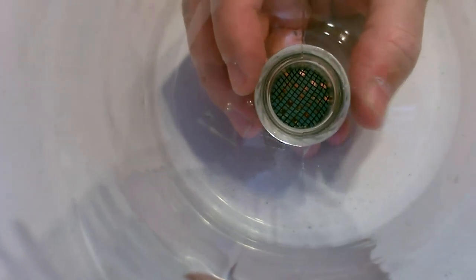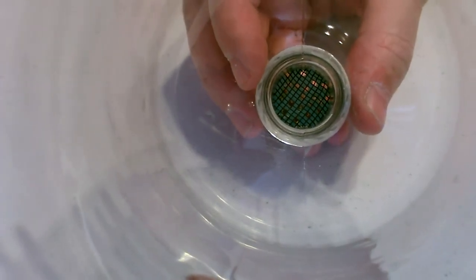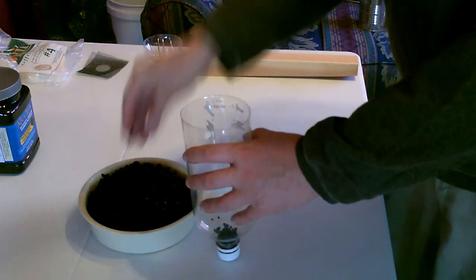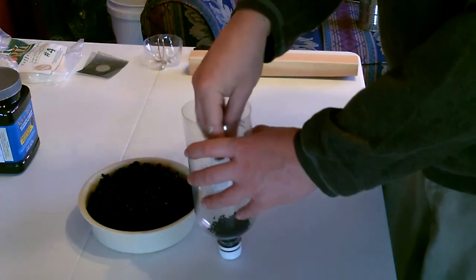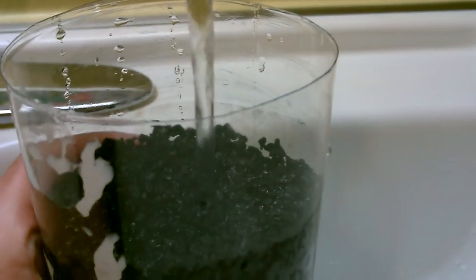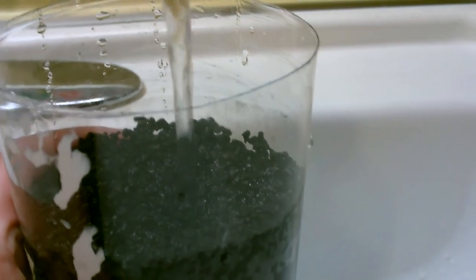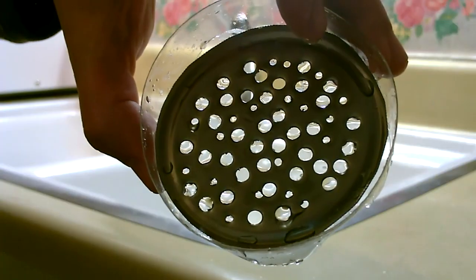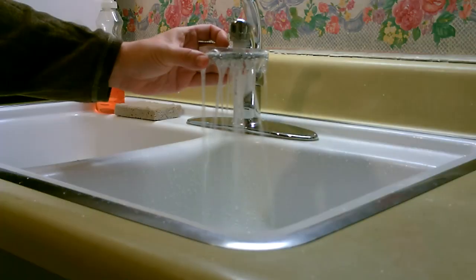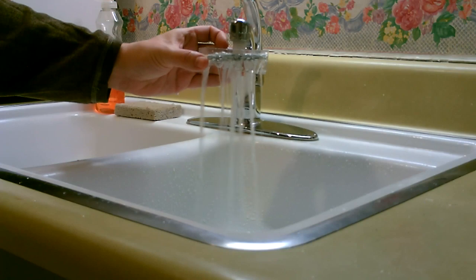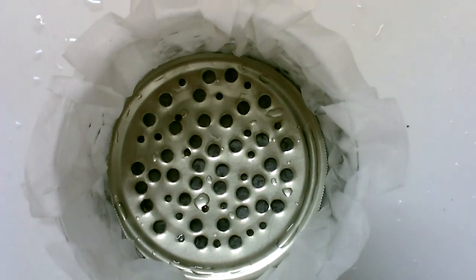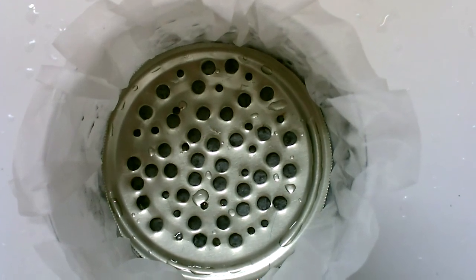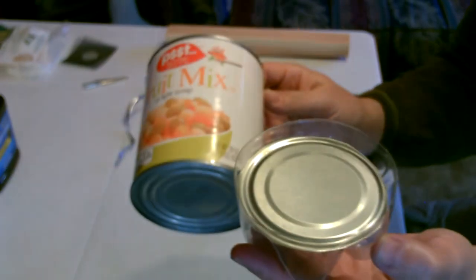All right, the next step, add the activated carbon. So the last thing I'm going to do is add a diffuser at the top that'll spread the water out so it evenly flows through all the material. You can use plastic or I'm going to go with metal.